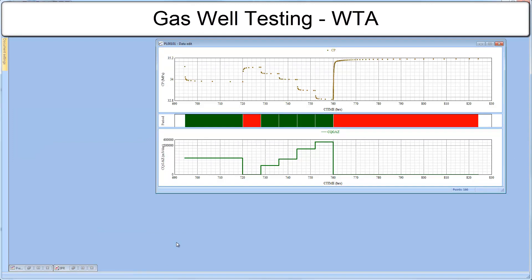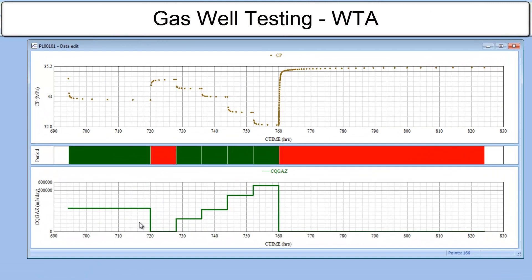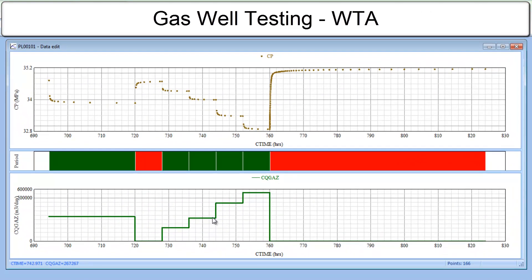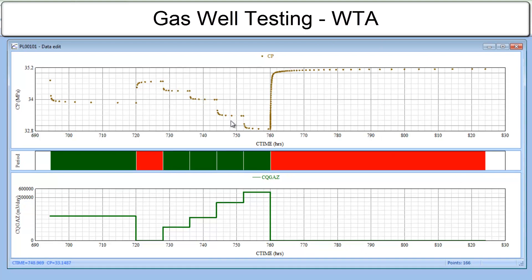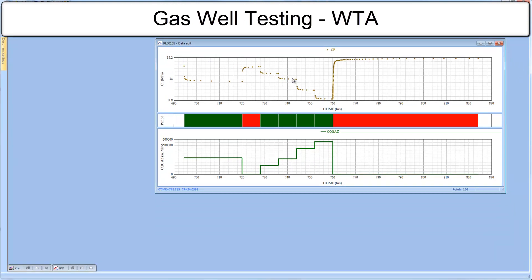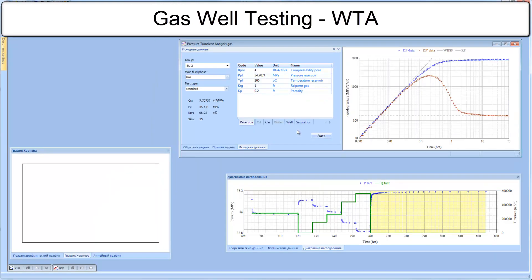Now we have a quick look at the gas well test interpretation example. The flow after flow test was run with four drawdowns and increasing step rate change. It was finished with one extended buildup. Actually flow after flow portion of the test is different from deliverability flow after flow test, as it does not require to wait for pseudo steady state.